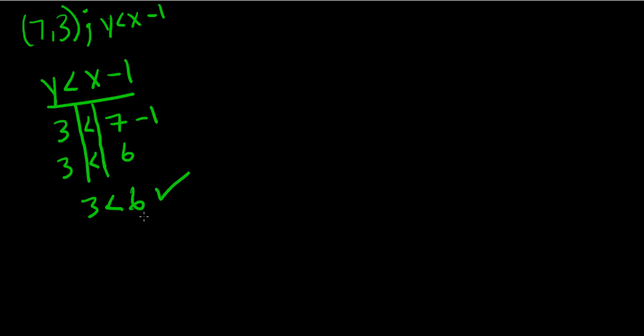Let's look at another example. We have the inequality y is greater than 3x plus 2, and we have the ordered pair 4, 5. Again, we want to substitute 4, 5 for x and y in the equation.